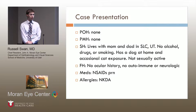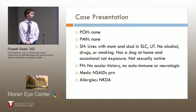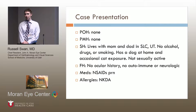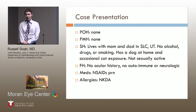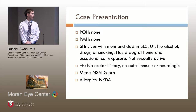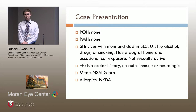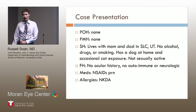She denied any recent sick contacts or recent travel. Her ocular history was otherwise unremarkable, as was her past medical history. She lived with her parents in Salt Lake City, did not abuse drugs or alcohol, didn't smoke, had a dog at home and occasional cat exposure with family members, but was not sexually active and had no other notable risk factors. No autoimmune family or ocular history. She was using NSAIDs PRN but otherwise no regular medications and no known allergies.